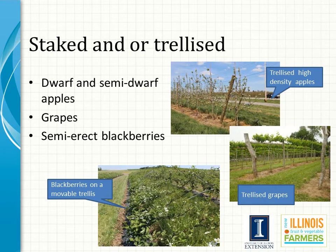Due to poor anchorage or brittle graft unions, many grafted dwarf apple trees require support in the form of a trellis system and/or an individual post. Other fruit crops that require a trellis are semi-erect blackberries and grapes.